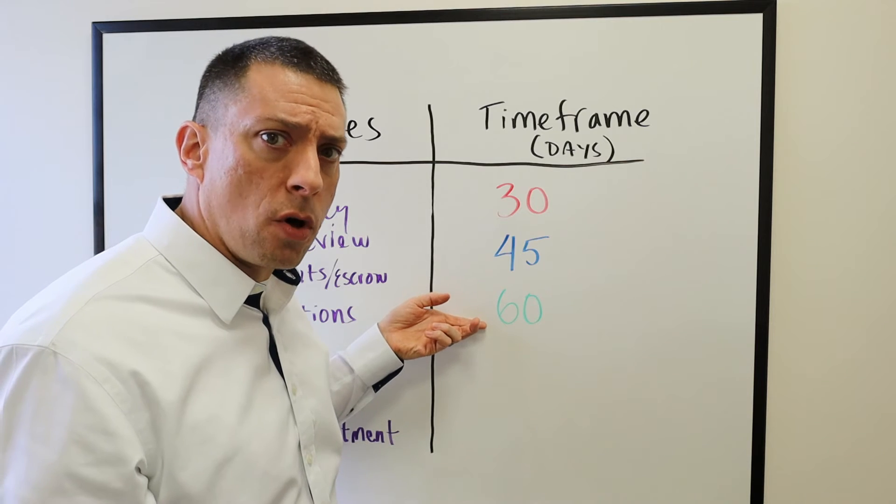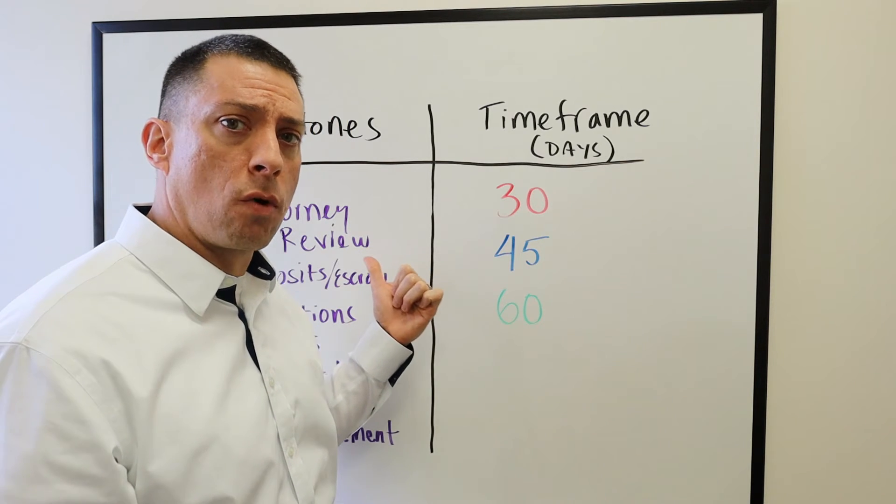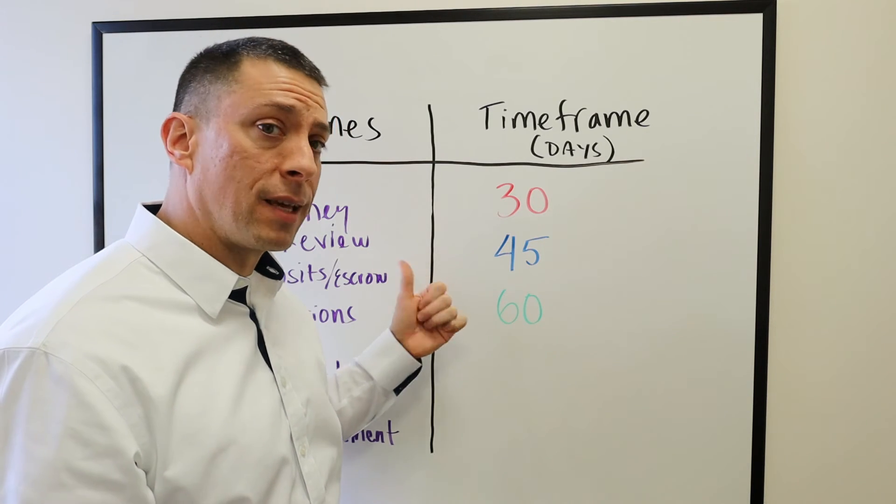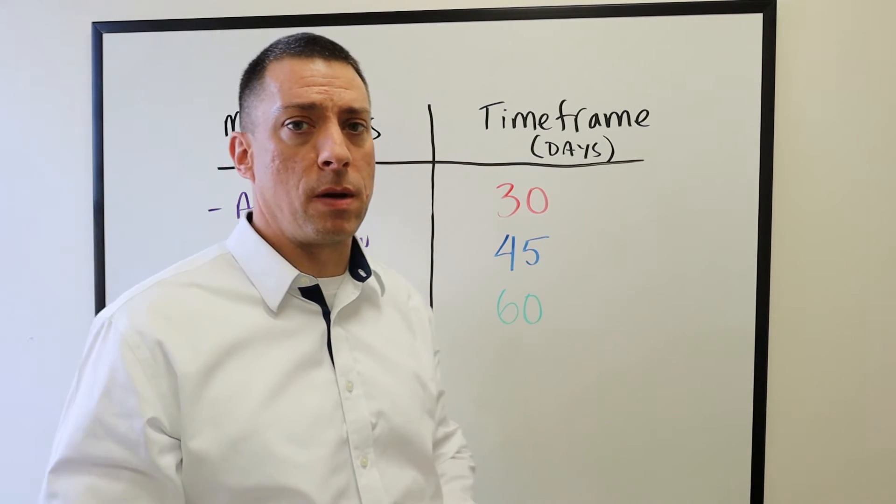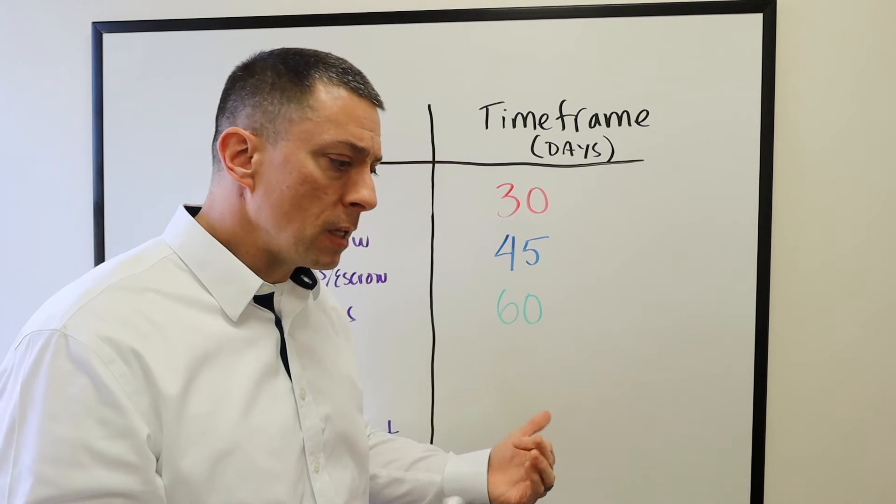Because you're usually able to move through all this stuff in less time than you need for 60 days. So usually with 60 days, sometimes it feels like there's a sit and wait period. But again, this is all negotiable.